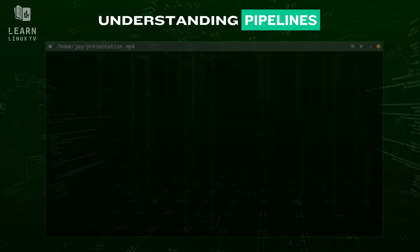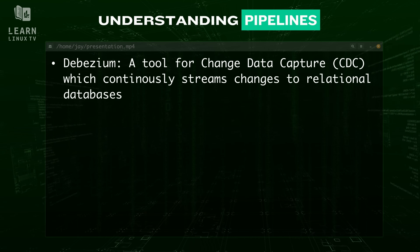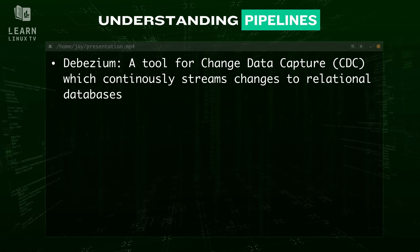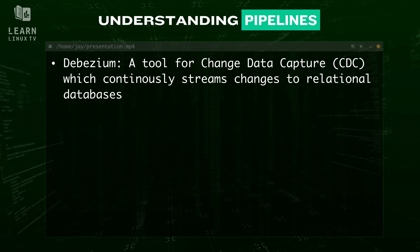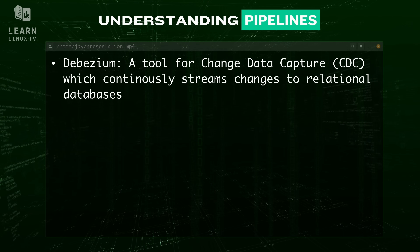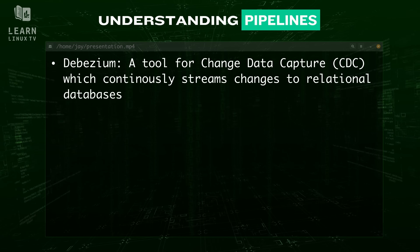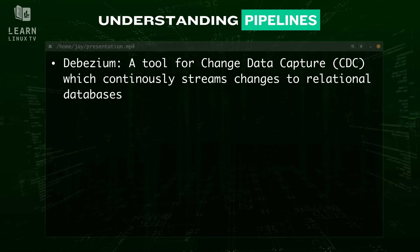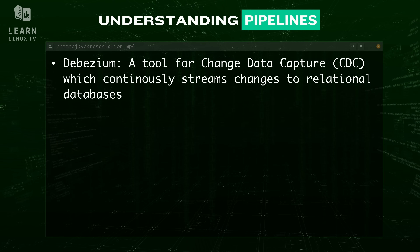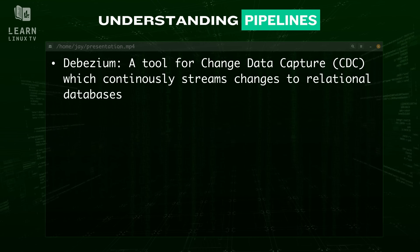The last technology to highlight is Debezium, a tool for change data capture, or CDC. It continuously streams changes from relational databases and other sources into systems like Kafka, allowing big data pipelines to react to updates in real time instead of relying on batch jobs. In practice, Debezium is key for keeping data synchronized across modern architectures.